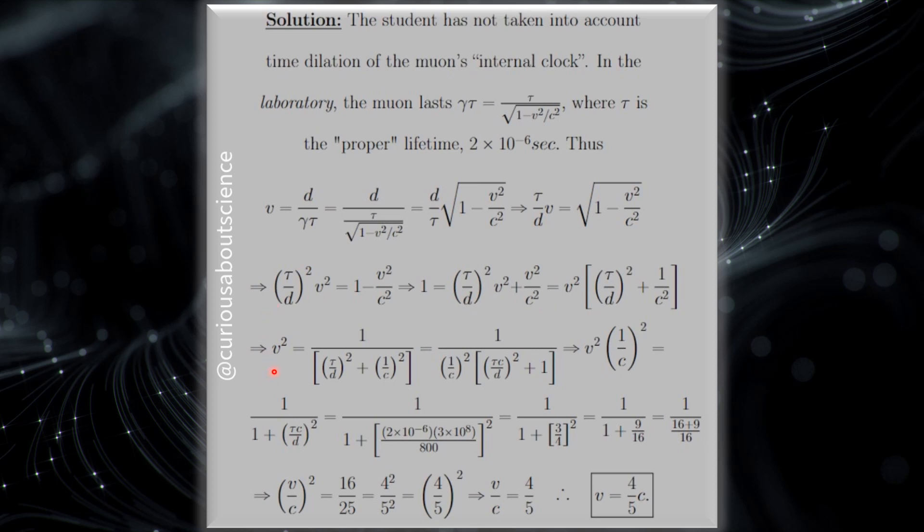So here, we solve for V squared by dividing the bracket over. And then we factor out this 1 over C squared term by putting a C squared in the numerator here of the tau term. This allows us to multiply this over to the V squared side. So we have everything over here. And we do this because now we can write V squared over C squared as one big fraction, which we do down here.